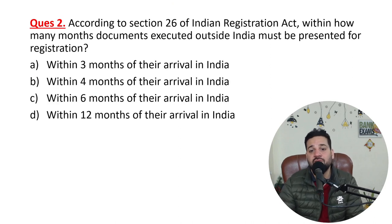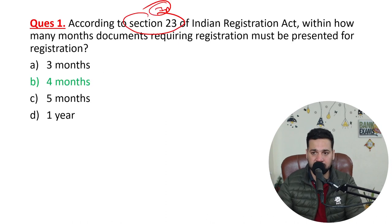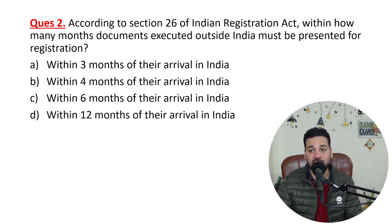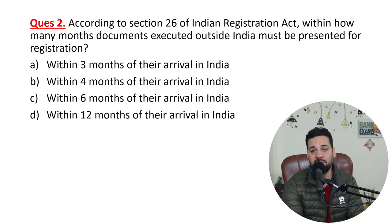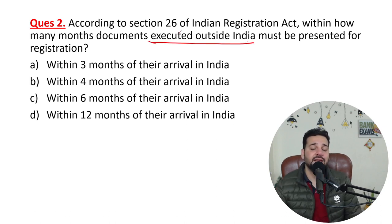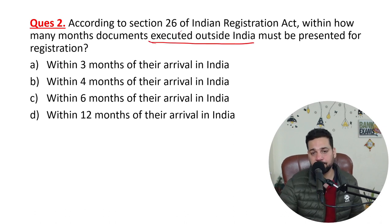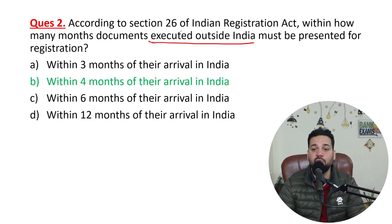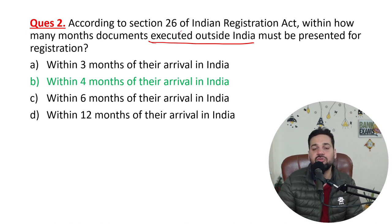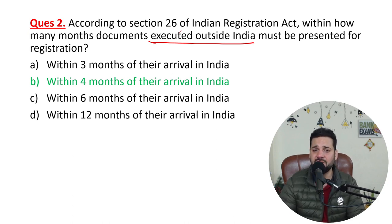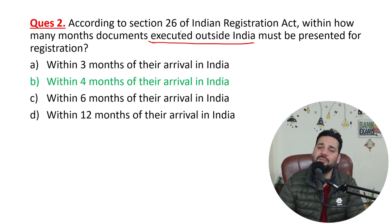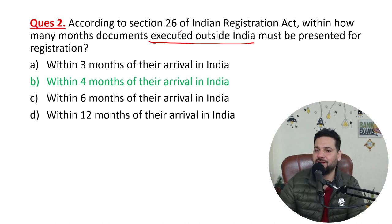Question number two: according to Section 26 of the Indian Registration Act, within how many months must a document executed outside India be registered? If a document was not executed in India but outside India, then within four months of arrival in India, you need to register the documents — only then will they be considered valid. Please remember: four months of arrival in India, Section 26 of the Indian Registration Act.